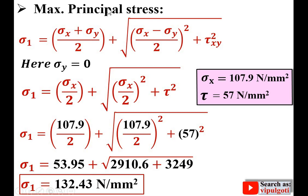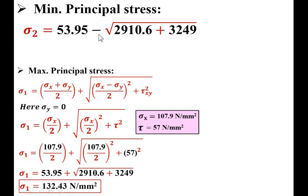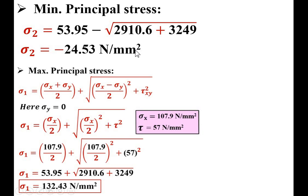For minimum principal stress, the formula is the same but with a minus sign instead of plus: σ2 = σx/2 − √((σx/2)² + τ²). All values remain the same; only the sign changes. Simplifying gives σ2 = −24.53 N/mm². This is the second answer — minimum principal stress.